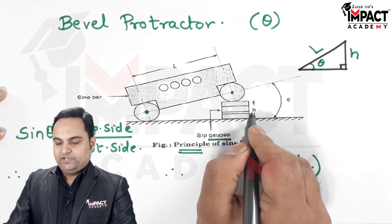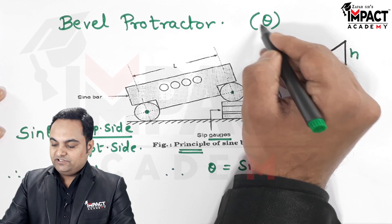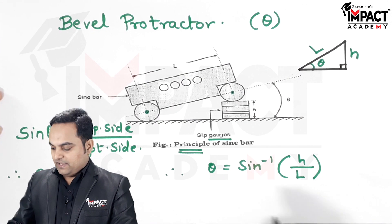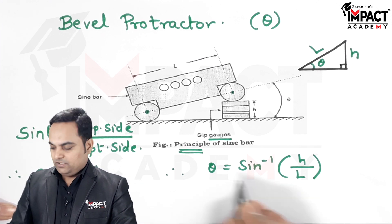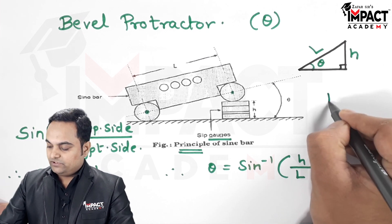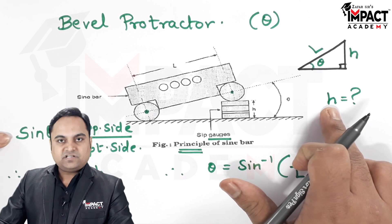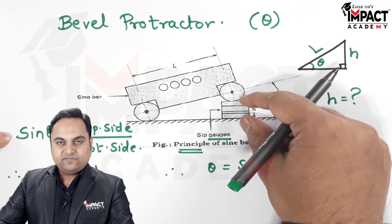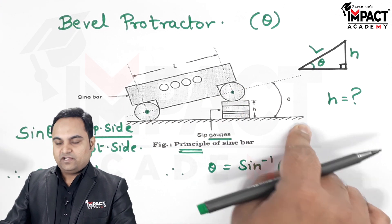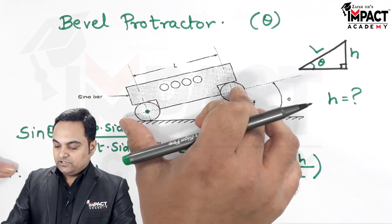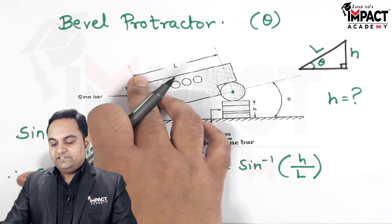Using the bevel protractor, we find angle theta temporarily. With that theta and known L, we substitute into the formula to find H — the required height of slip gauges. Once this height is known, we fix that amount of slip gauges and place the sine bar on the surface whose angle was measured. The same sine bar is then kept over that surface and a dial indicator is moved along the top of the sine bar.